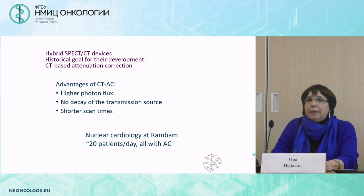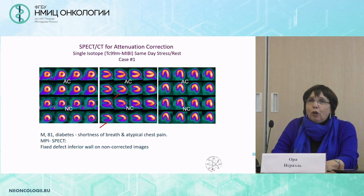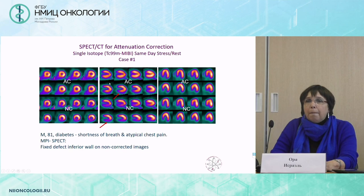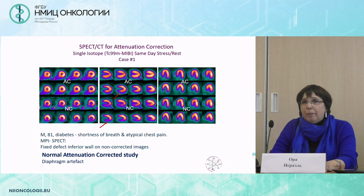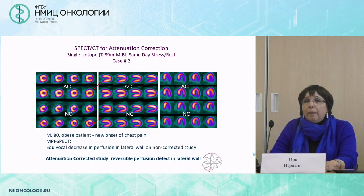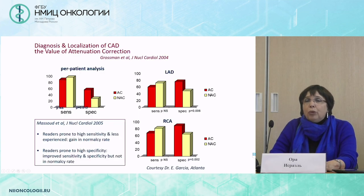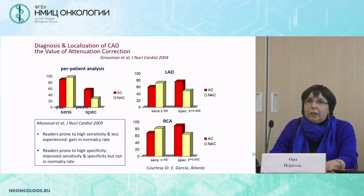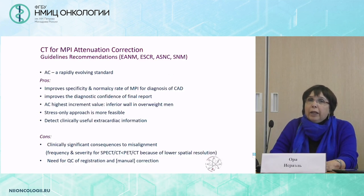Nuclear medicine SPECT-CT historically started with attenuation correction in cardiology. In one patient, attenuation correction allowed us to exclude ischemia — it was a diaphragmatic attenuation artifact. In another patient, we could more easily diagnose ischemia in the lateral wall using attenuation-corrected images. Attenuation correction has improved the specificity of myocardial perfusion imaging and is today recommended in most guidelines by most cardiac societies.